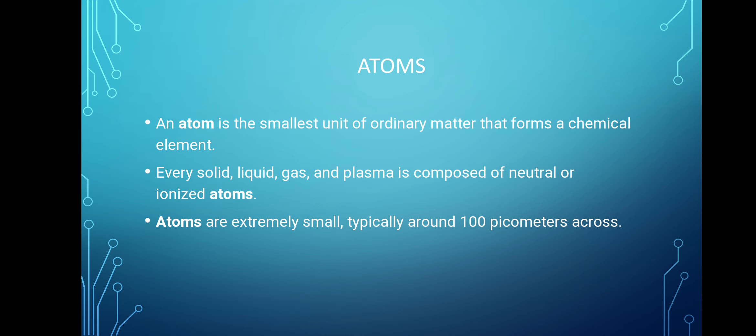Now the question arises, what do you mean by an atom? An atom is the smallest unit of ordinary matter that forms a chemical element. Every solid, liquid, gas and plasma is composed of either neutral or ionized atoms. Atoms have a small size, as small as 100 picometers.